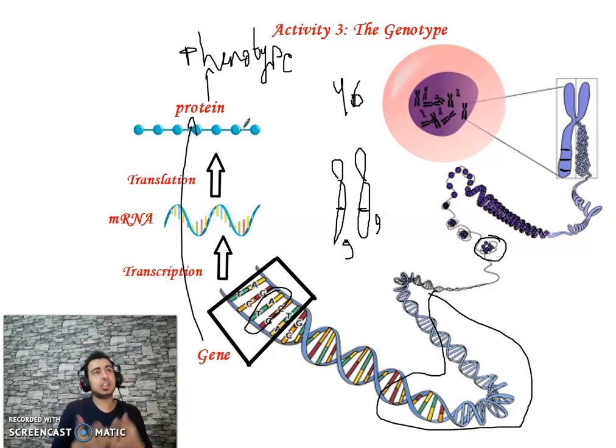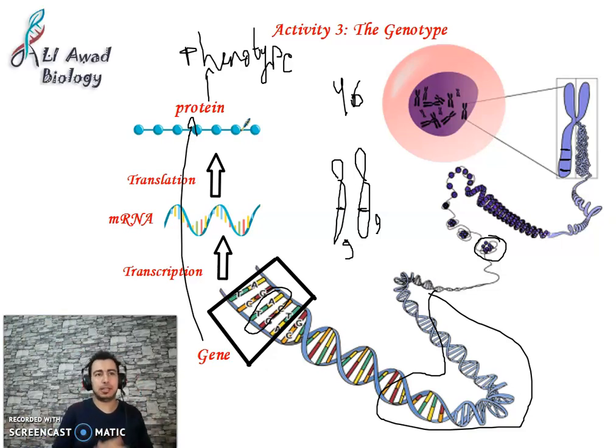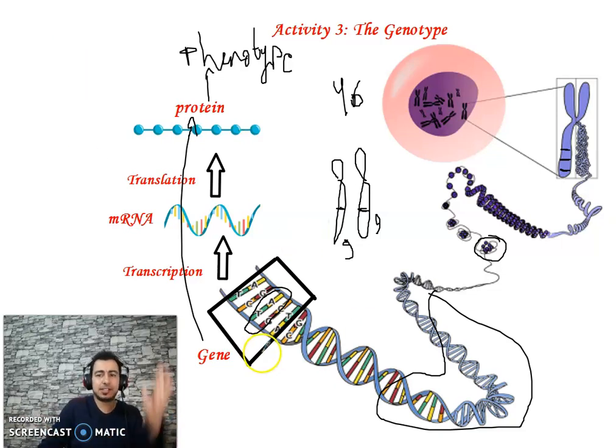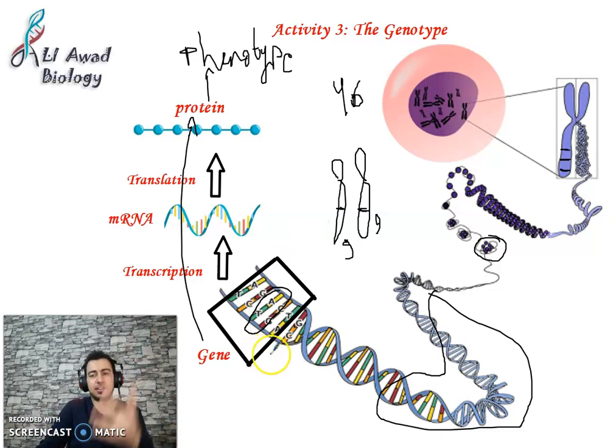Let's think about the gene of the blood group, the gene of insulin, the gene of hemoglobin. Are there only one form of each, or many forms?